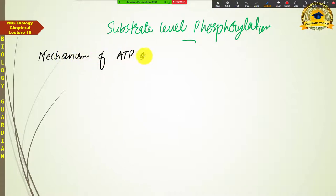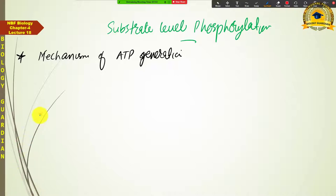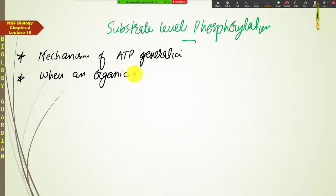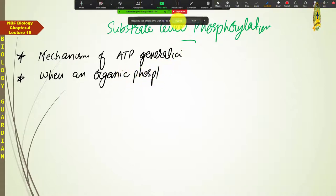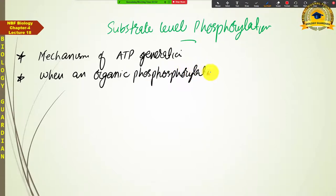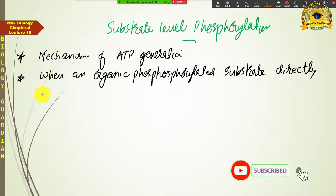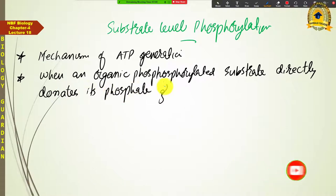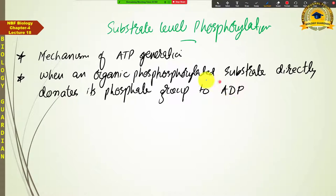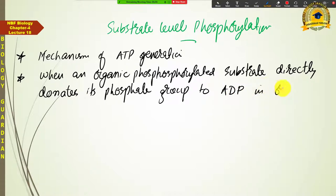Substrate level phosphorylation is a mechanism of ATP generation in which an organic phosphorylated substrate — an organic molecule that has a phosphate group — directly donates its phosphate group to ADP, causing ADP to directly gain a phosphate group and become ATP.